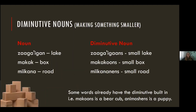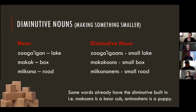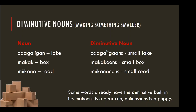We also talked about diminutive nouns — how to make something small. Zaga'igan is a lake, zaga'igan is a small lake. Makak is a box, makakoon is a small box. Mikana is a road, mikana'is is a small road. Many words already have diminutive built in, like makoonz which is a baby bear or animusheids which is a puppy. There are three different suffixes to make something diminutive, and you learn which one to use as you go.